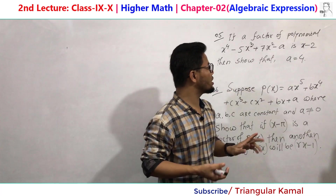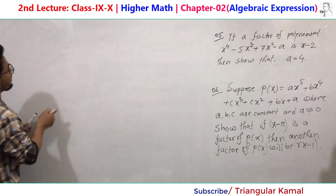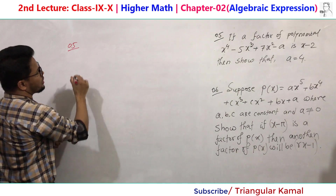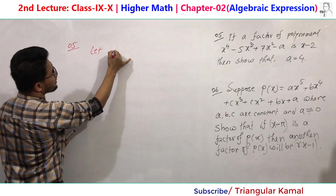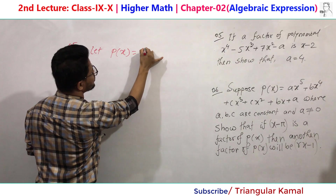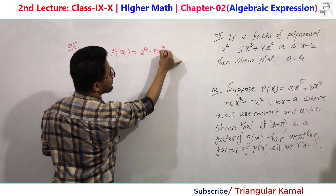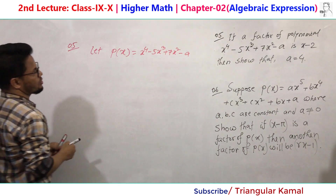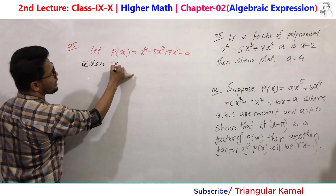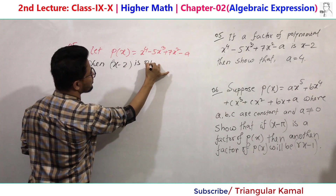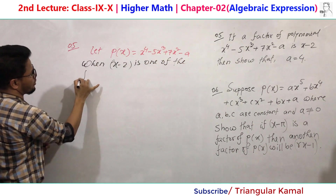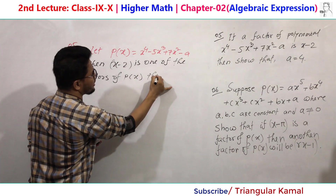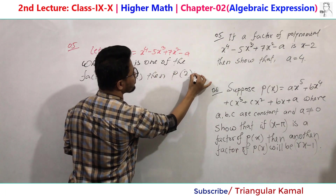We will do this using the remainder theorem. Let p(x) equal x to the power 4 minus 5x cubed plus 7x squared minus a. When x minus 2 is one of the factors of p(x), then p(2) equals 0.